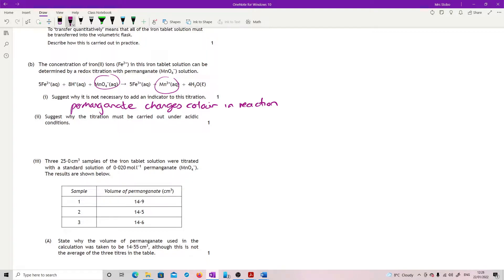Suggest why the titration must be carried out under acidic conditions. You just have to look at the equation here. The equation needs hydrogen ions. That's it.